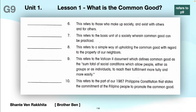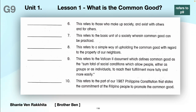Six: this refers to those who make up society and exist with others and for others. Seven: this refers to the basic unit of a society wherein common good can be practiced. Eight: this refers to a simple way of upholding the common good with regard to the property of our neighbours. Nine: this refers to the Vatican II document which defines common good as the sum total of social conditions which allow people either as groups or as individuals to reach their fulfilment more fully and more easily.